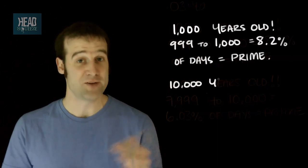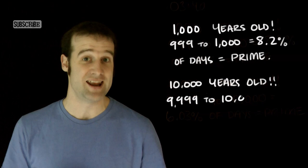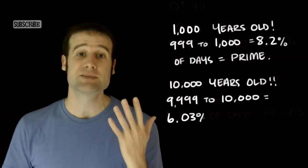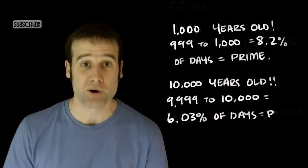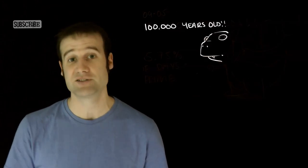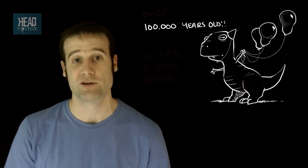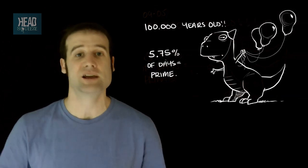Should you wonder about 10,000? I've done the numbers for that as well. Between the age of 9,999 and 10,000, only 6.03% of those days are prime. I also double-checked for 100,000. So between 99,999 and 100,000 years old, only 5.75% of those days are prime. And it continues to get worse.